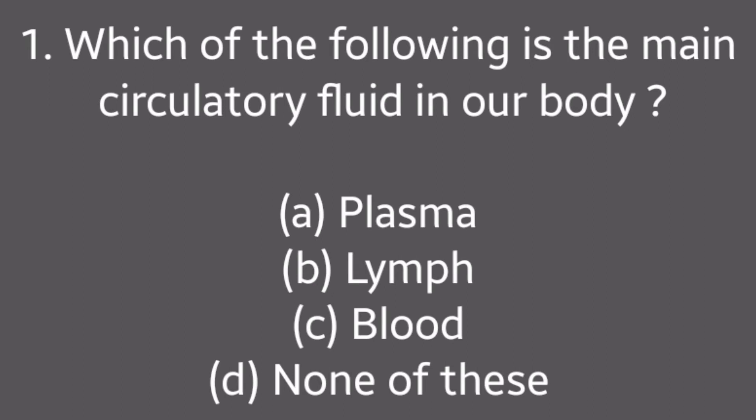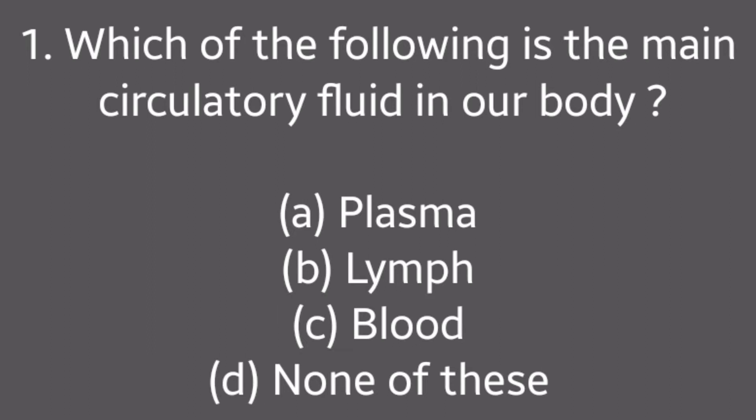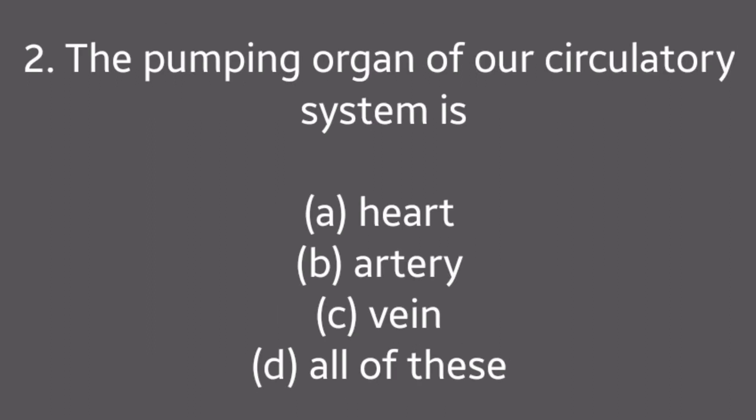Question No. 1: Which of the following is the main circulatory fluid in our body? Options: Plasma, Lymph, Blood, None of these. Answer is Option C: Blood.